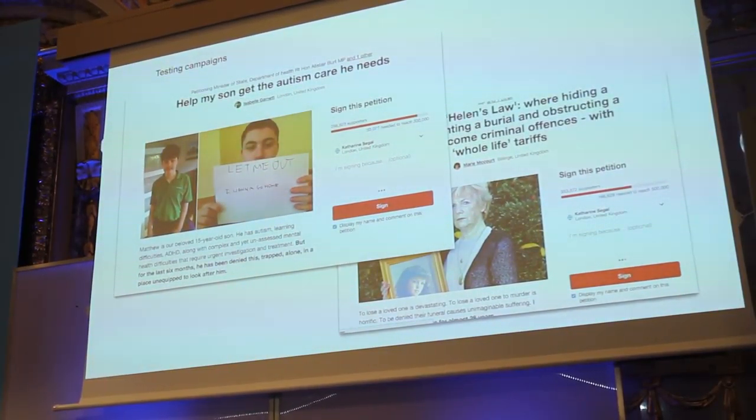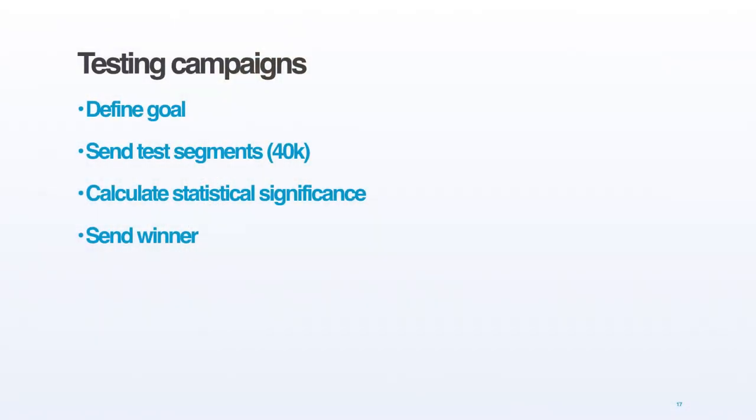One of the challenges there is you come in on Monday and have literally no idea what you're working on — which is also one of the exciting elements. At the Labour Party, it was about saying: we know what our goal is — often recruiting volunteers or reaching people on Facebook. We would develop two completely different campaigns for trying to achieve that, send them both to 40,000 people, and whichever one won, that was the one we would send out wider. So we were always going through this process: defining the goal, sending out test segments, calculating statistical significance, sending the winner.